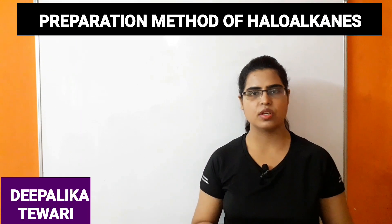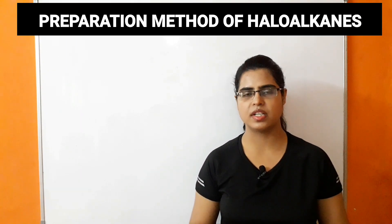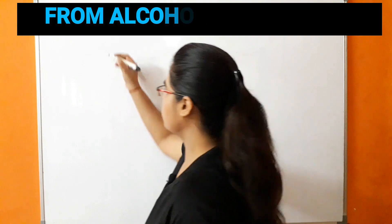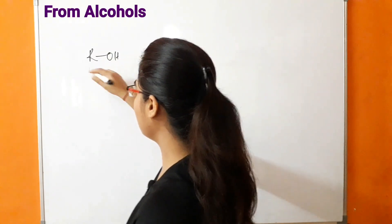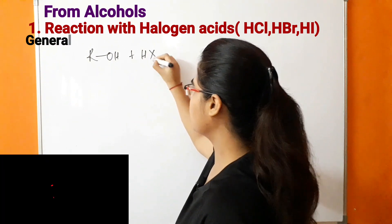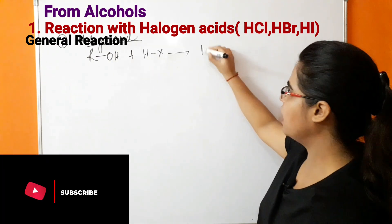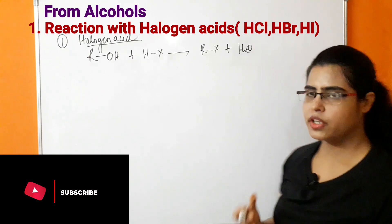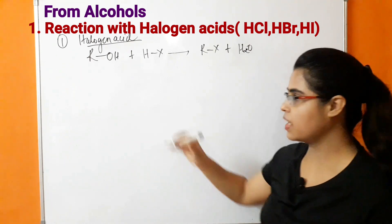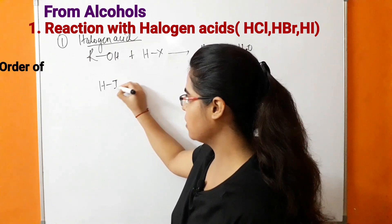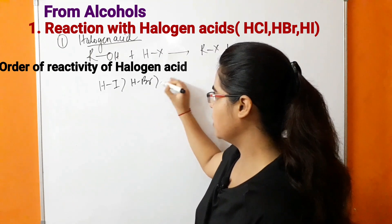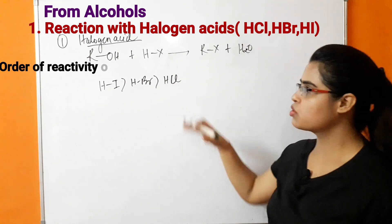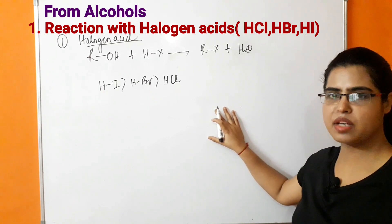The first preparation method of haloalkanes is from alcohols. In the general reaction, alcohol reacts with halogen acid to form RX (haloalkane) and H₂O is removed. The order of reactivity of halogen acid is: HI is most reactive, then HBr, then HCl.